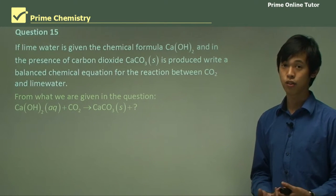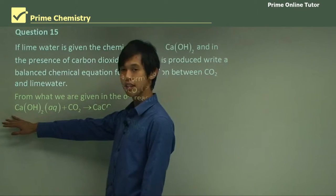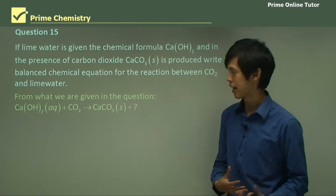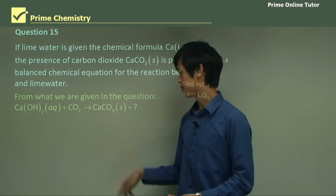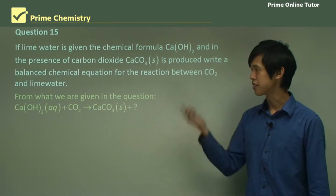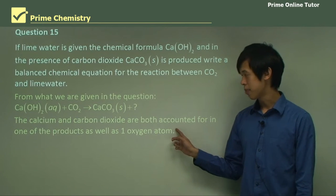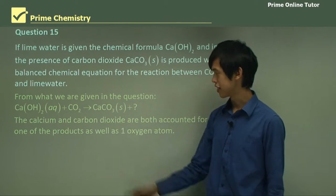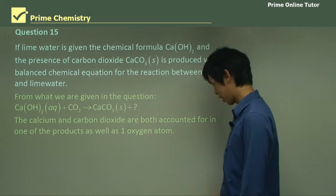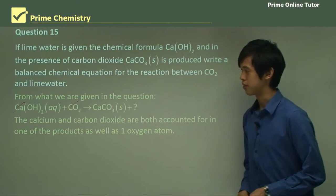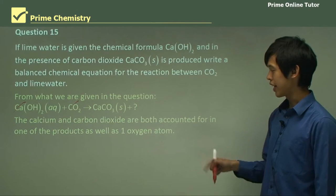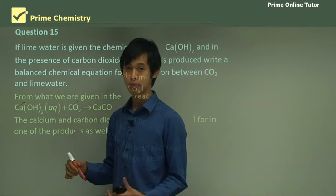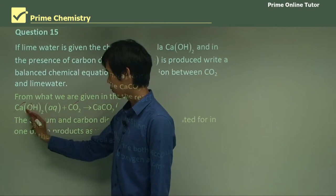We know that there's going to be calcium hydroxide, there's going to be carbon dioxide as our two reactants. So those are the two things that are going to make the cloudiness happen. And we know that CaCO3 is produced, because the question tells us that. Now the calcium and carbon dioxide are both accounted for in one of the products. So the calcium here, carbon dioxide here, is accounted for in this product. So we don't need to worry about that. No need to worry about those two. As well as one of the two oxygen atoms. So there's two oxygen atoms here in the two hydroxide molecules, or two hydroxide parts. So we can cancel one. But what's left?